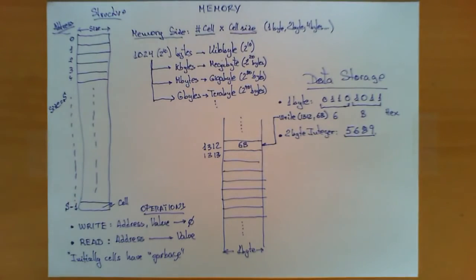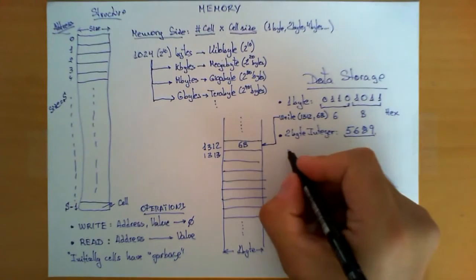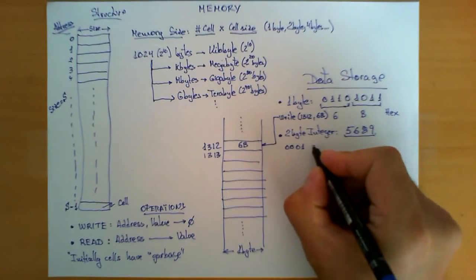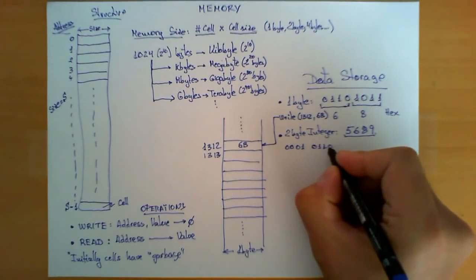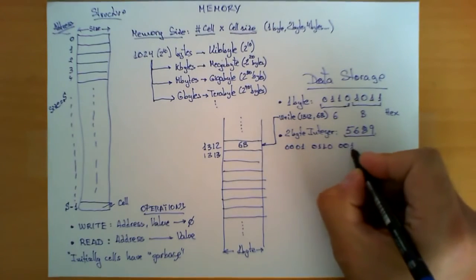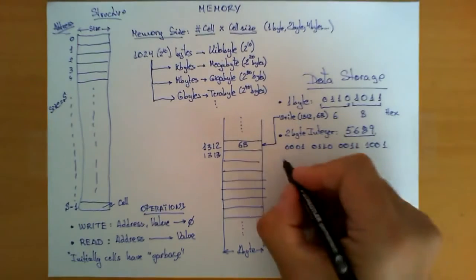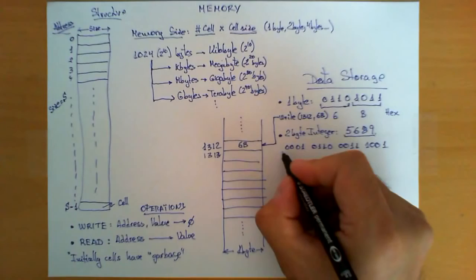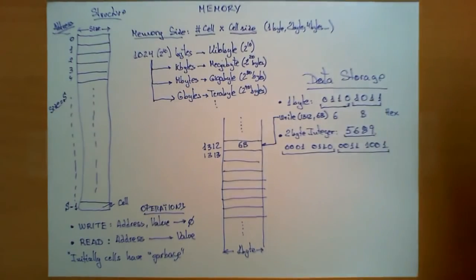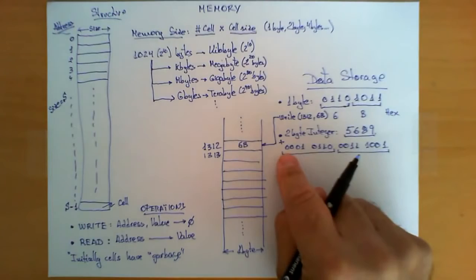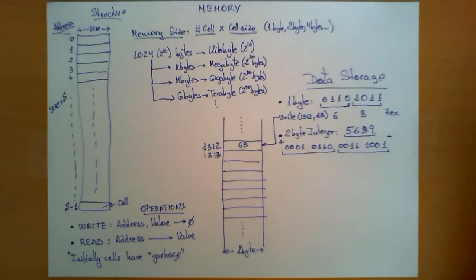Because my memory is always storing binary numbers. If I translate this to binary, if you do the math, then you end up with the following sequence of bits: 0001, 0110, 0011, 1001. As you can see, this is the first byte, and this is the second byte. Another important thing, the most significant byte is in the left hand side, and the least significant byte is in the right hand side.